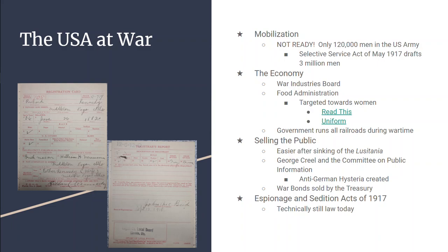The United States is going to mobilize the economy. There are numerous agencies created to control the war. One of them is the War Industries Board, which is going to be responsible for establishing production priorities — basically telling businesses what to make and how to make them.